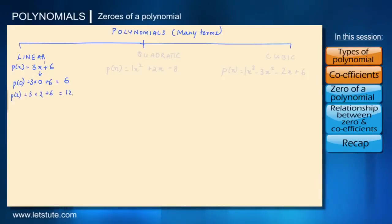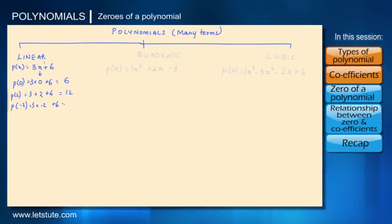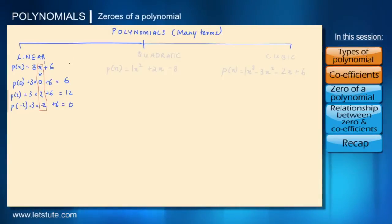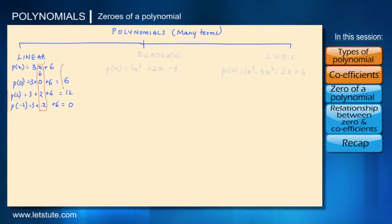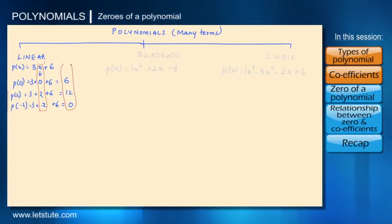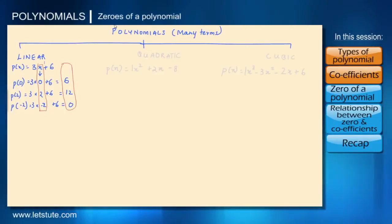Let's say x is equal to 2, p of 2 is 12. Let's say x is equal to minus 2, a negative number we've taken here, that is equal to 0. Do you see when we've taken different values for x, the values for this polynomial also change? This means the polynomial depends on the variable x.